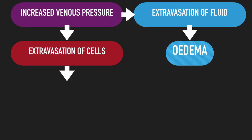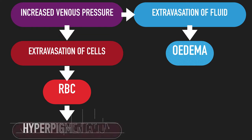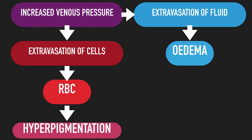When red blood cells leak into the tissue, the content of the cells are broken down. Iron molecules inside the cells are deposited into the subcutaneous tissues, contributing to the typical red-brown discoloration referred to as hyperpigmentation. The histological description of the iron oxide or rust pigment in the tissue is referred to as hemosiderin.